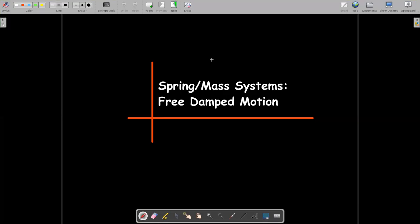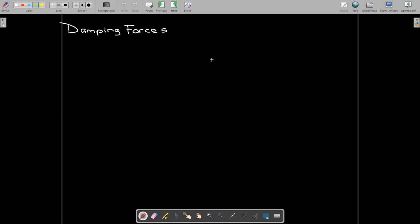In this short video, we're going to revisit our spring mass system, but this time we're going to add some damping. Now this makes it realistic. When you have a spring and you release it, it doesn't oscillate forever because of some friction or some other forces which cause it to slowly stop oscillating. That's what we call damping.